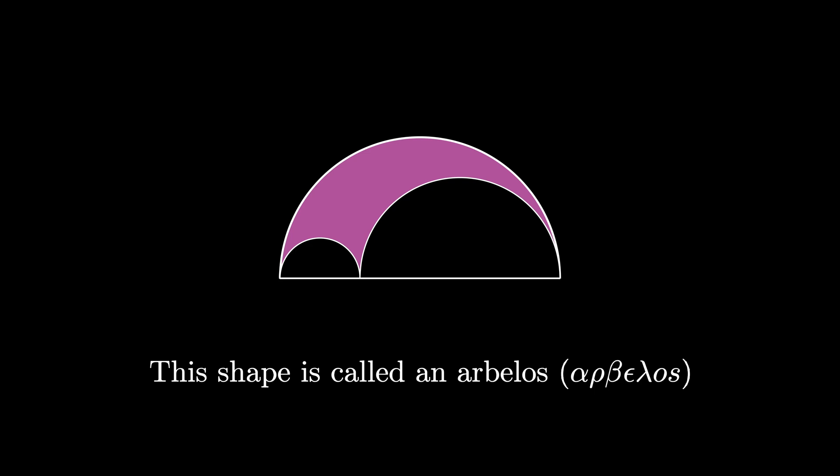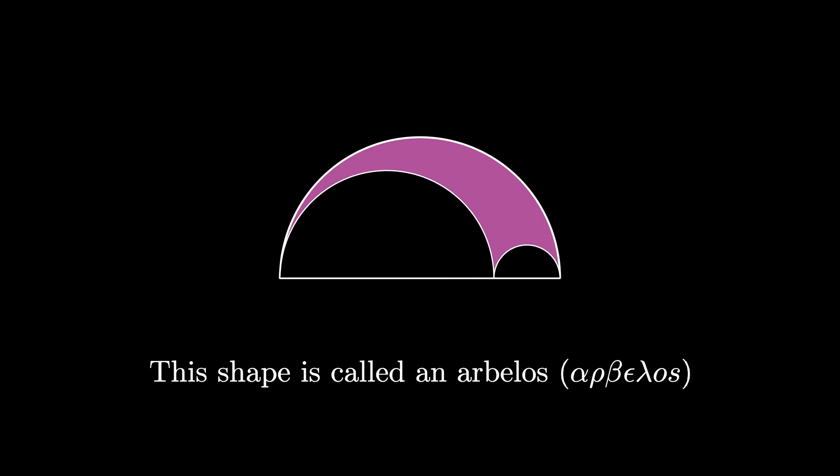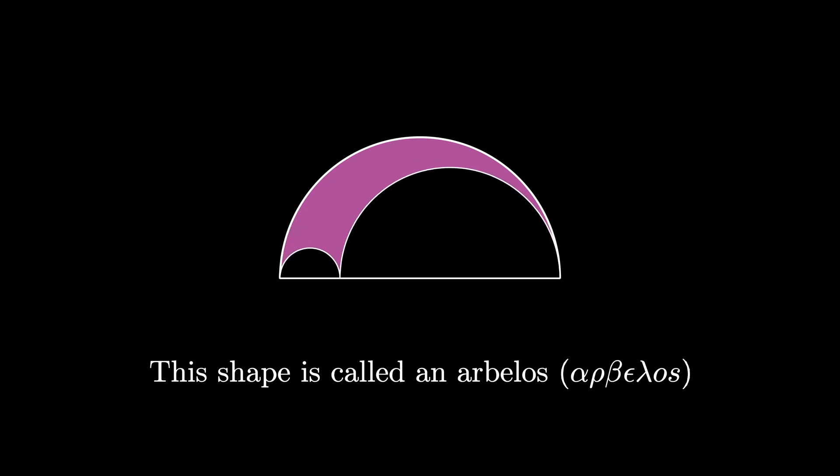The term arbelos literally means shoemaker's knife. By varying the sizes of the inner two semicircles we get various different arbelos shapes all lying inside the same outer semicircle.